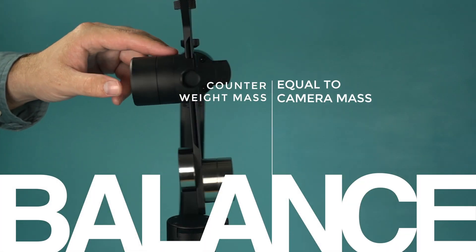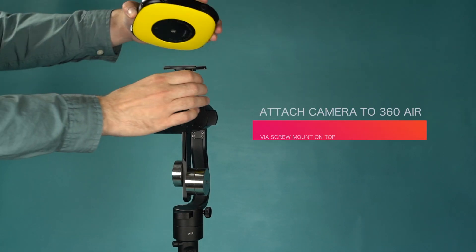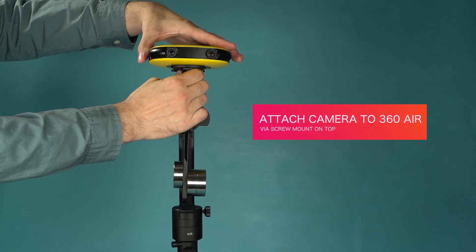Counterweight mass should be equal to the camera's mass. Locate your camera's mount and attach the camera to the MozaGuru 360 Air.